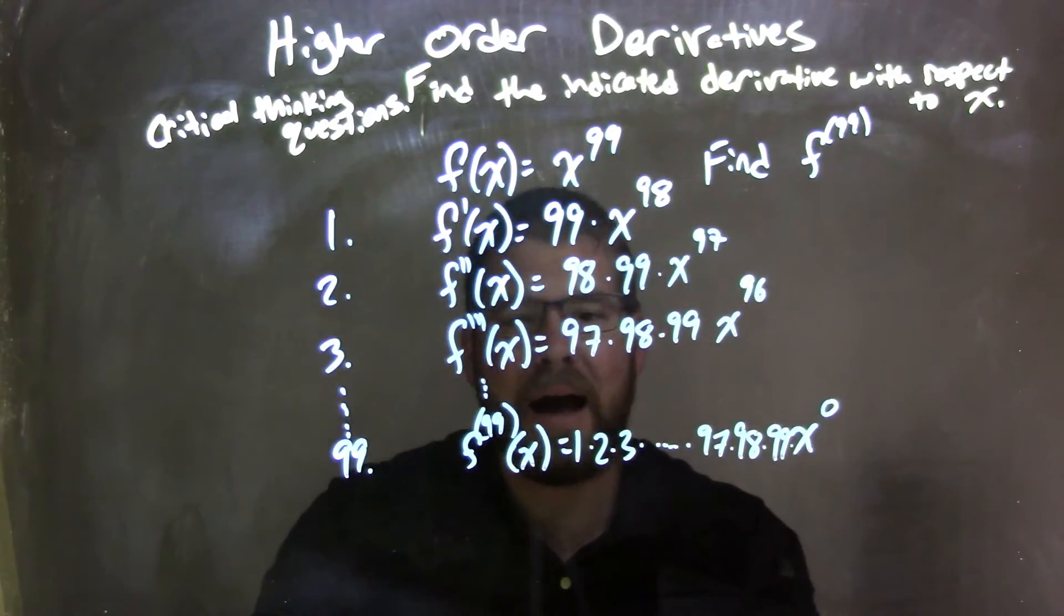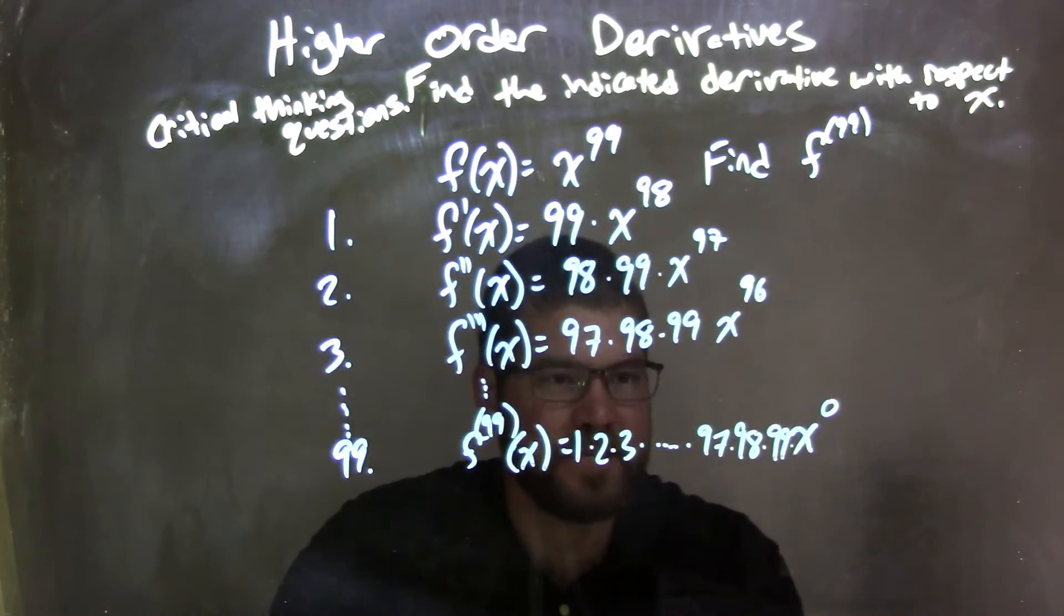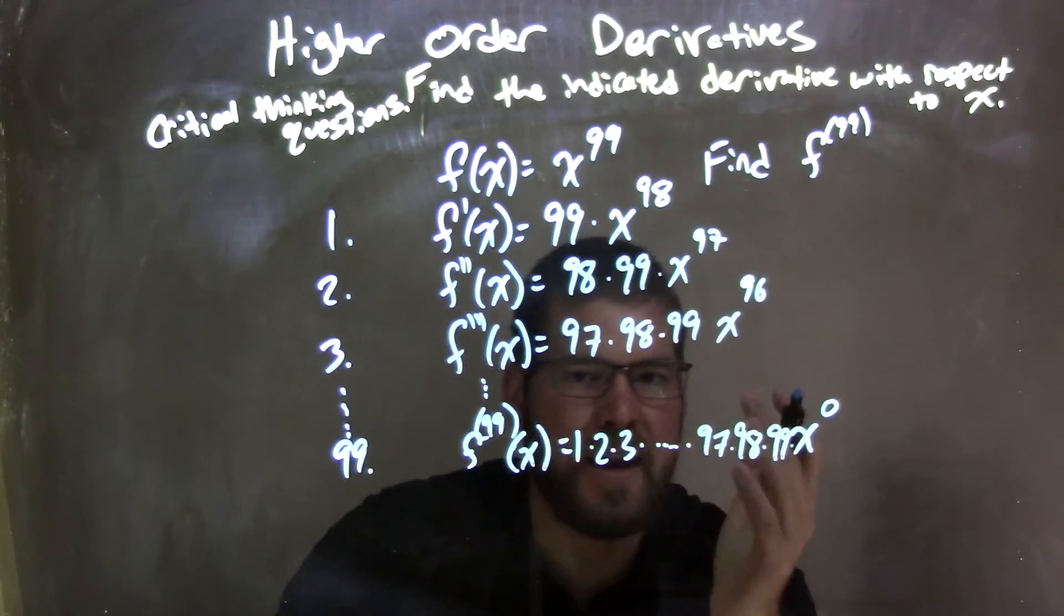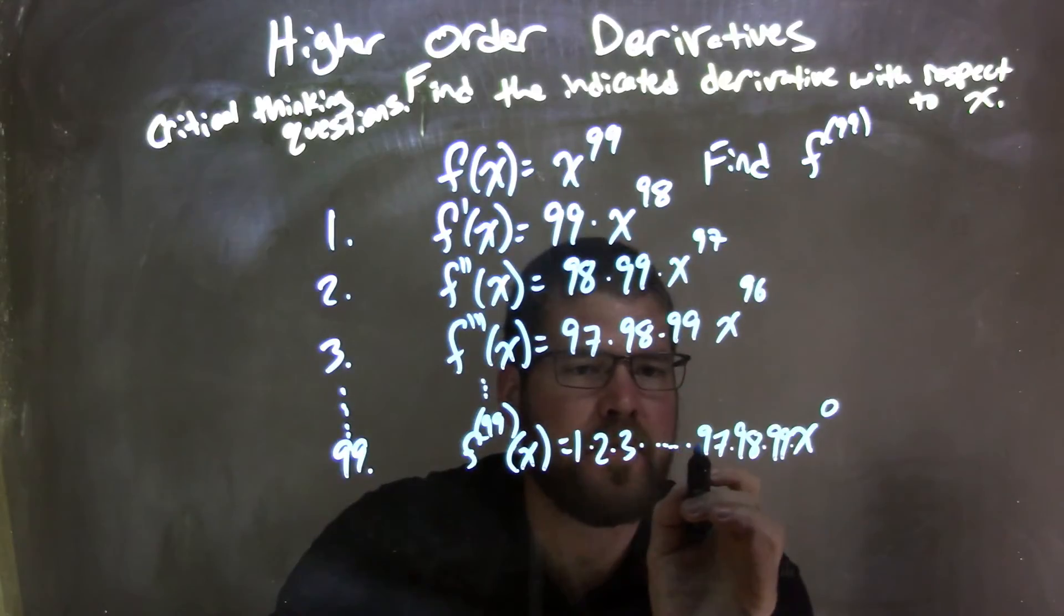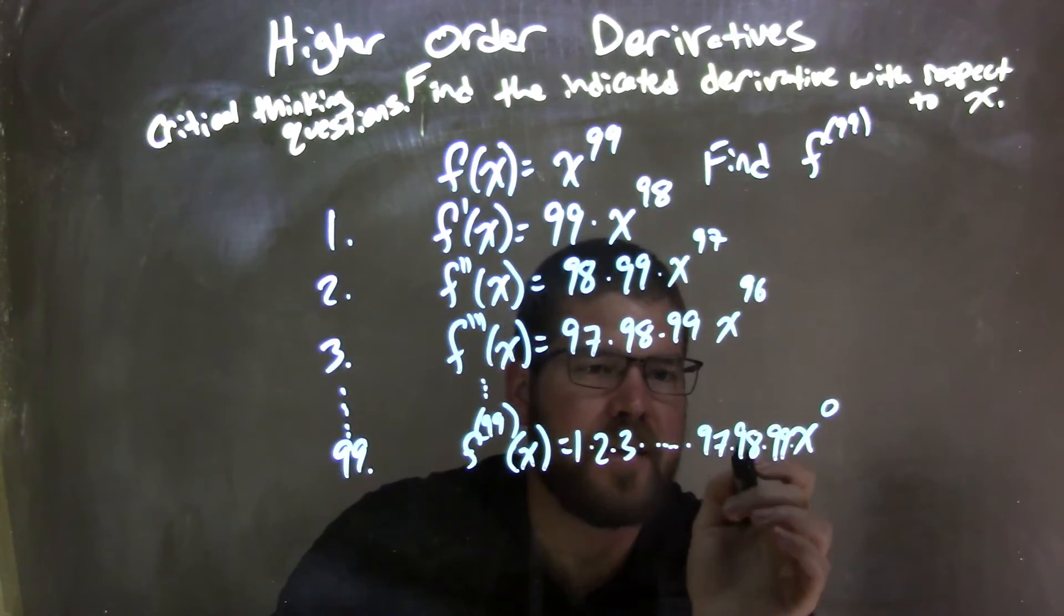Well, x to the 0 power is just 1, and 1 times whatever this is is just whatever that is. What do we see here? We have 1 times 2 times 3 times 4 times 5 times 6, all the way up to 97 times 98 times 99.